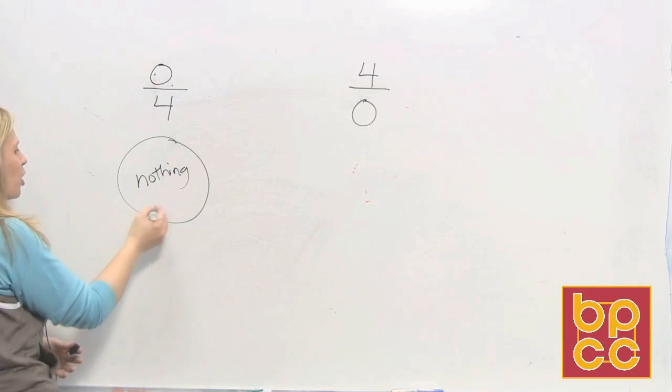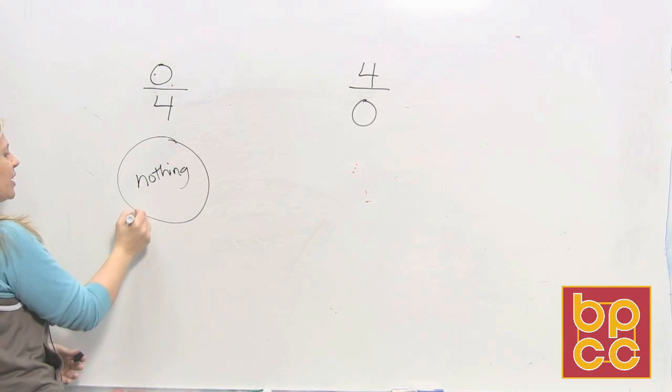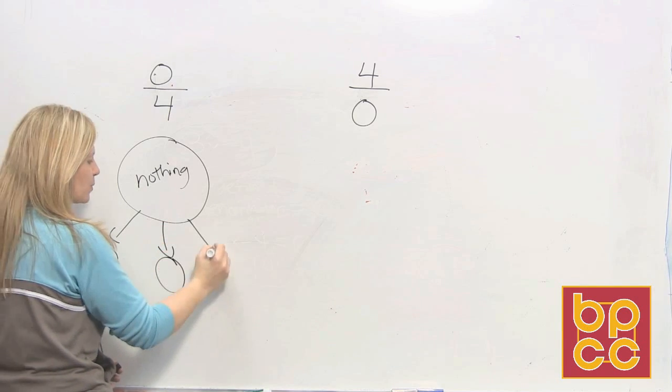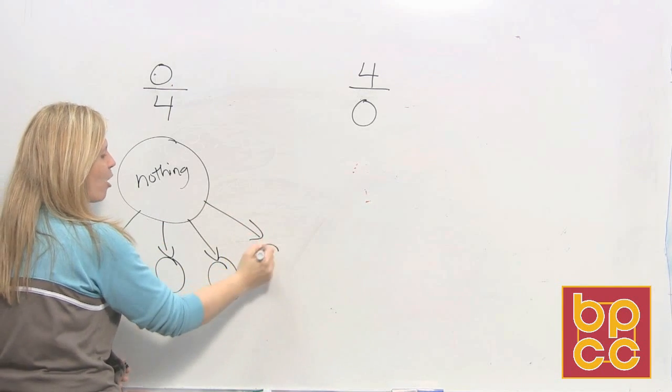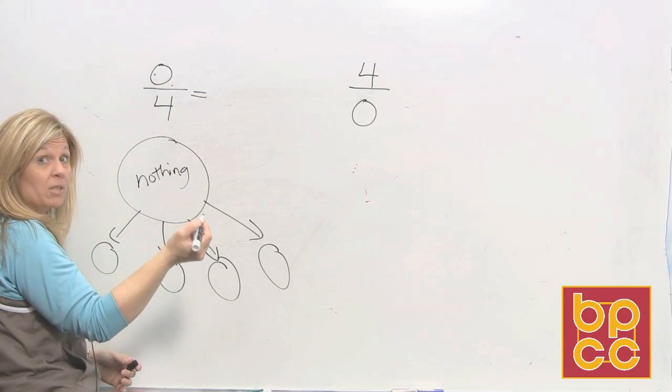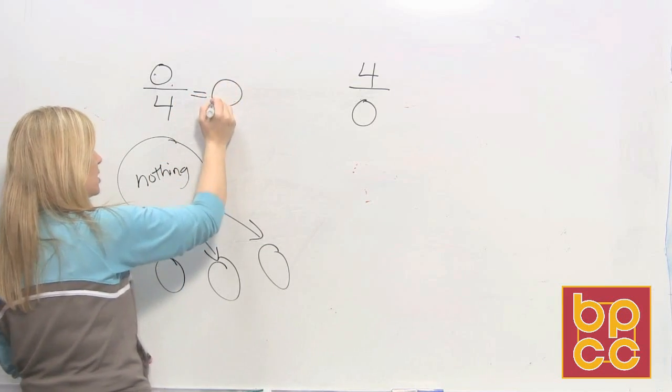I could physically show that this way. I have a circle of nothing and I'm going to divide it among 4 people, 4 groups. And they also are going to get nothing. And as we know, what number in our number system represents nothing? 0.